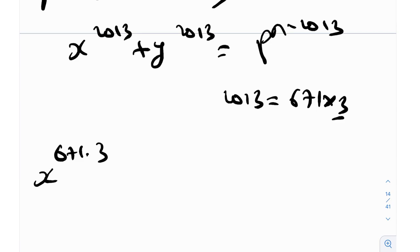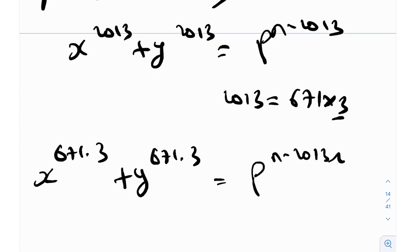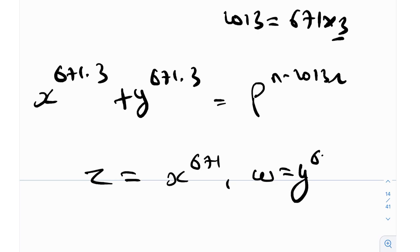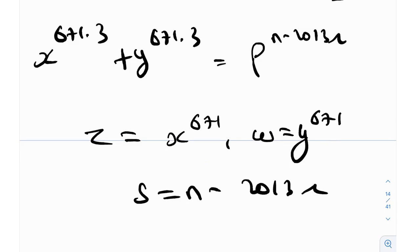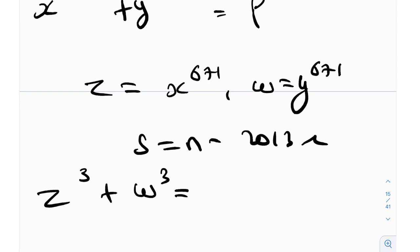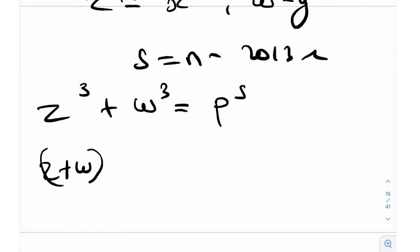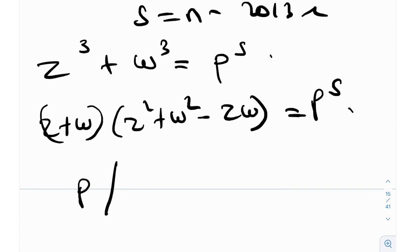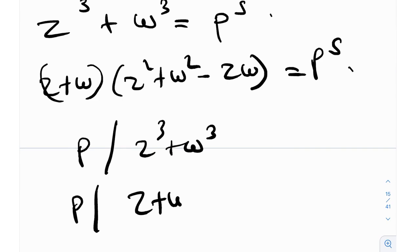Factorizing z³ + w³: (z + w)(z² + w² − zw) = p^s. From this factorization, we see that p divides z³ + w³, and additionally p divides z + w. So p divides a^m + b^m where m = 3, and also divides a^k + b^k where k = 1.